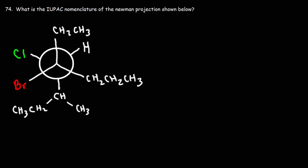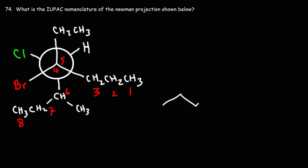What is the IUPAC nomenclature of the Newman projection shown below? First, before we name it, let's convert it into a bond-line structure. We need to identify the parent chain. If we count in one direction we get six carbons, but counting another way — where the front carbon is four, back is five, then six, seven, eight — gives us the longest chain of eight carbons.